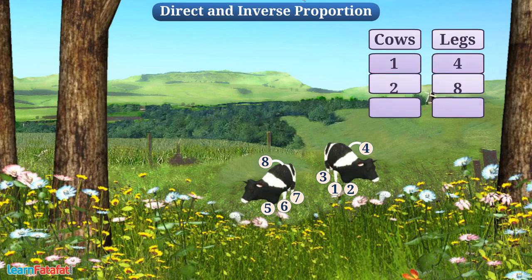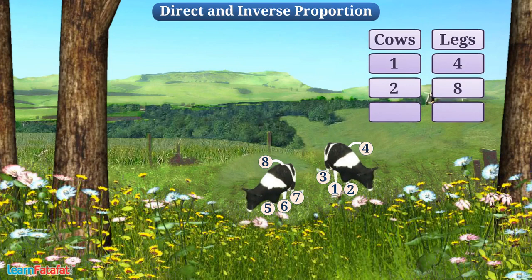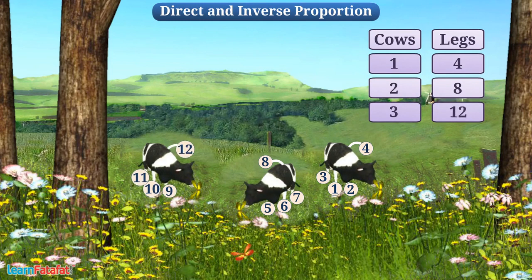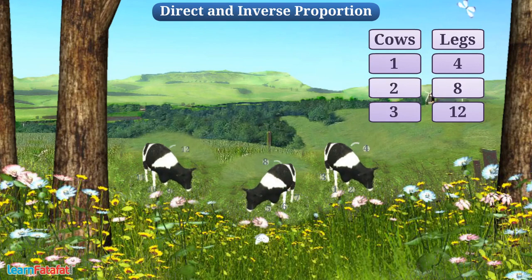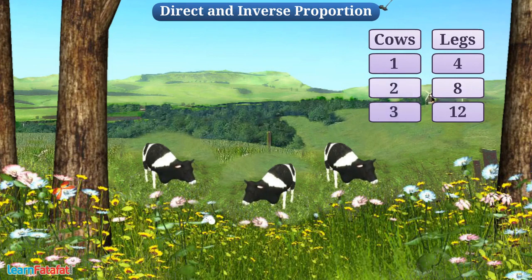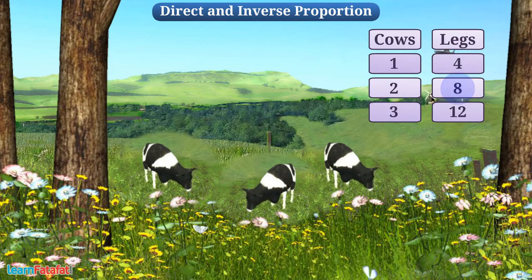Similarly, if there were three cows, total legs would be twelve and so on. We see that as the number of cows increases, the total number of legs also increases.